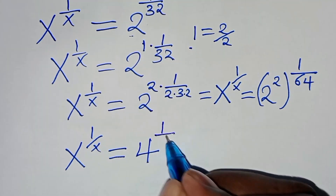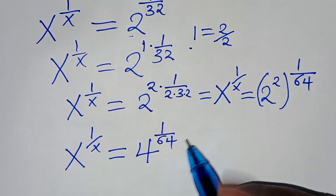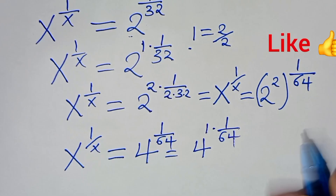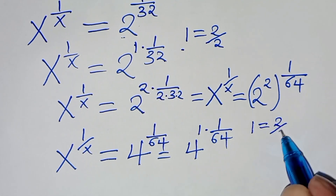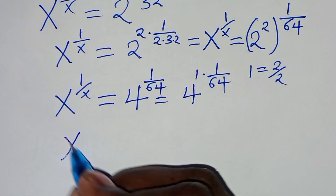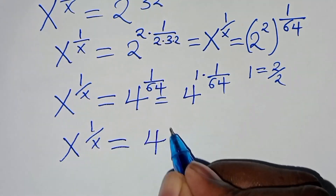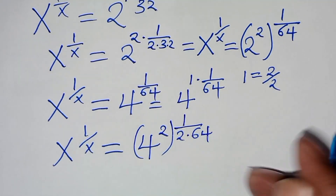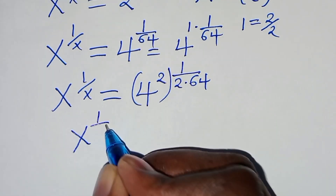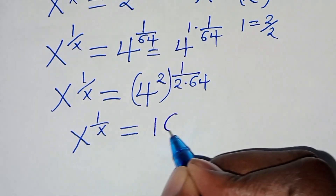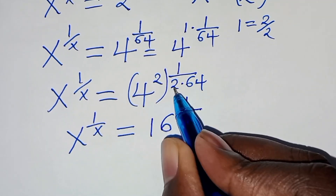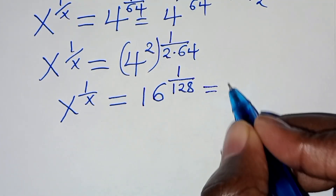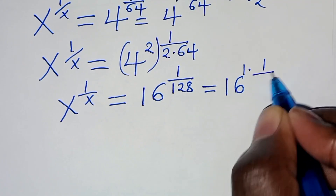We have x to the power 1 over x equals 4 raised to the power 1 over 64. We again express the exponent as 2 over 2, giving 4 raised to the power 2 over 2 times 64. This becomes 4 squared raised to the power 1 over 128, which is 16 raised to the power 1 over 128.